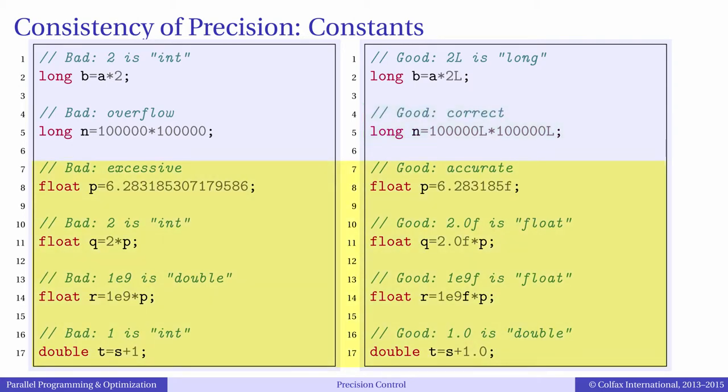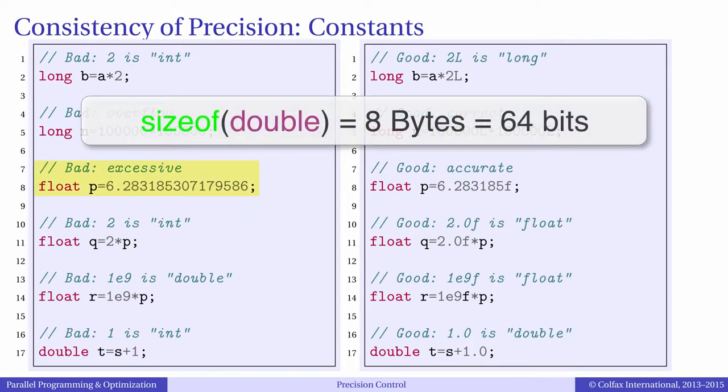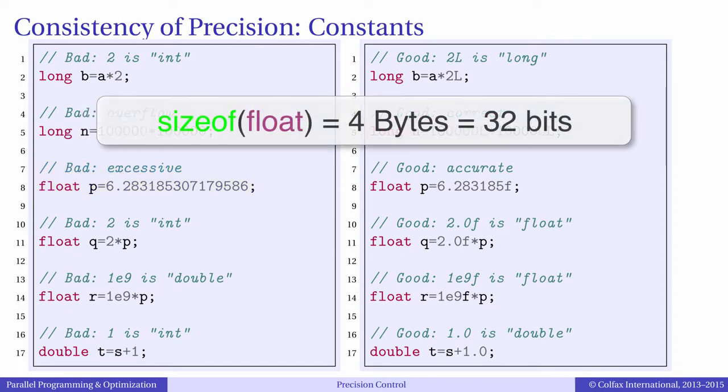There are similar rules for floating-point numbers. By default, literal constants with a decimal point are interpreted as doubles, that is, double precision 64-bit numbers. To indicate that a number is a float, that is, a single precision 32-bit floating-point number, you have to use the suffix F.